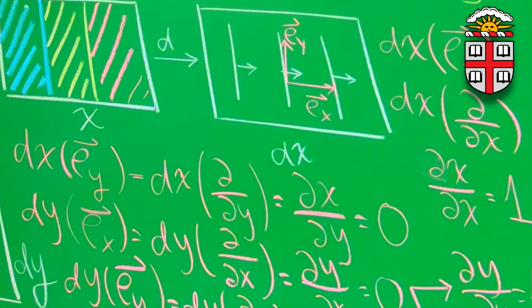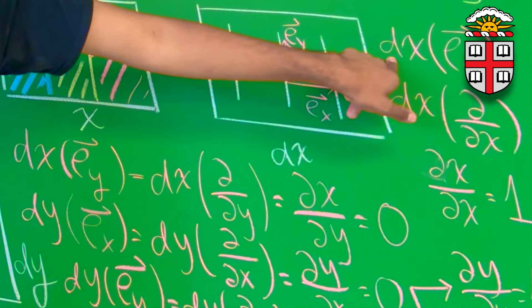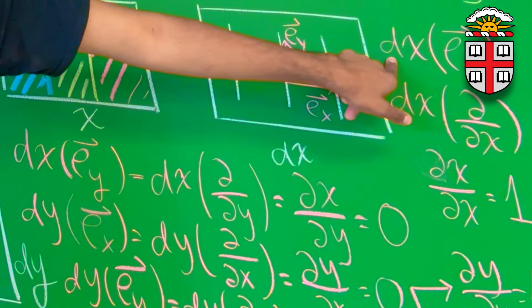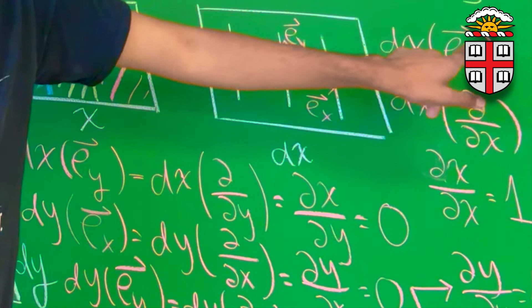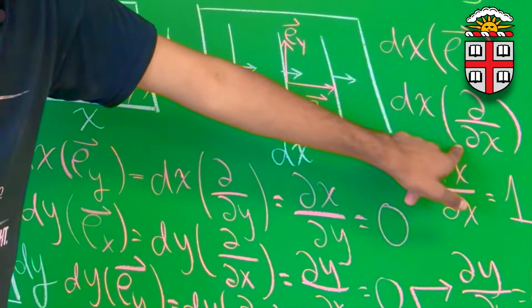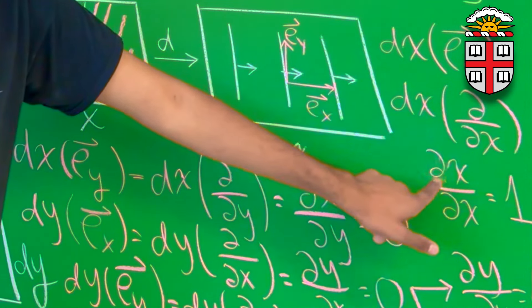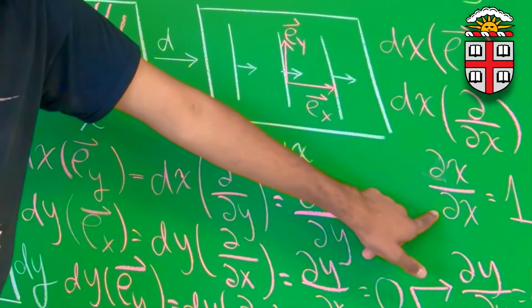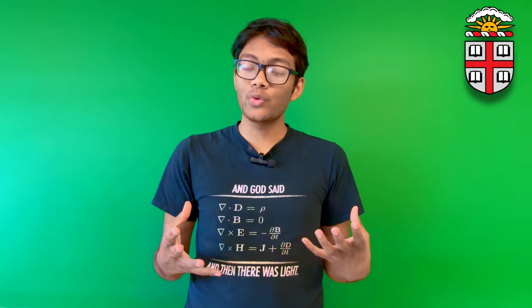How can we express that quantitatively? Apply the co-vector field dx to our basis vector e_x, expand e_x as the partial derivative, and ∂x/∂x is just 1. In the last episode, we saw how applying the differential operator d to a scalar field can convert it into a co-vector field.